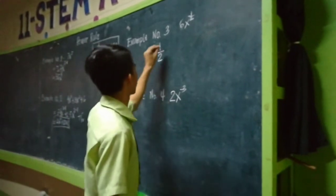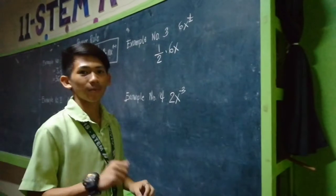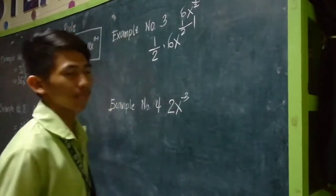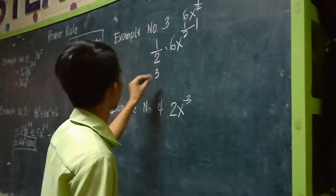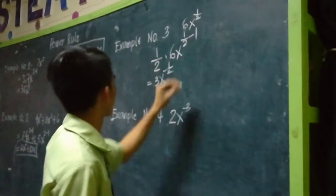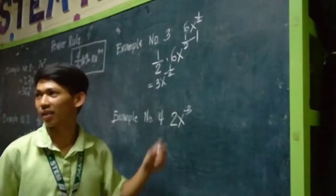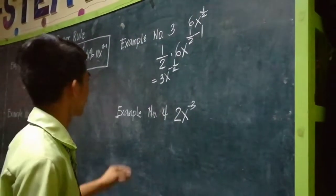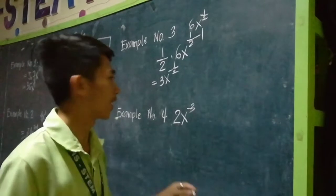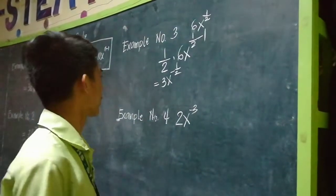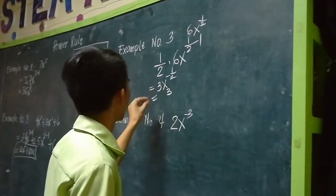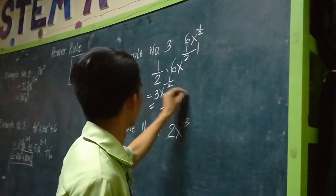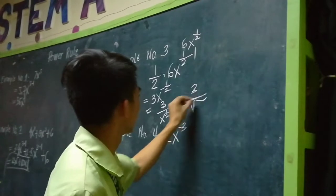Then subtract 1 from the exponent. But this is not yet the simplest form because your x is raised to a negative number. So all you want to do is put your x in the denominator to make the exponent positive. This becomes 3 over x^(1/2), or 3 over the square root of x.